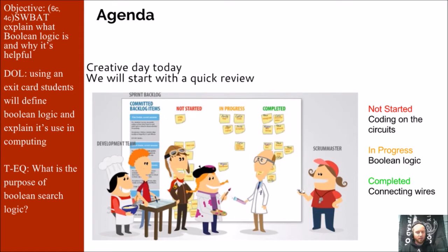What we have not started is coding on the circuits that we've created — that is totally possible, but we just currently do not have the resources. What I mean is we don't have breadboards, wires, and Arduinos — there are Raspberry Pi-type computers we could connect to the circuits. Hopefully that's something we'll have in the future. Currently in progress is understanding Boolean logic and all the variety of ways that logic can be used, and completed is connecting the wires together with transistors to create these gates.